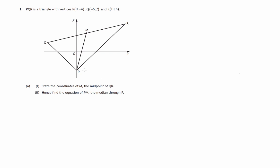We've got the coordinates given. P is 0, negative 4. R is the point 10, 6. And Q is the point negative 6, 2. So part A, the first part of that section, state the coordinates of M, the midpoint of QR.